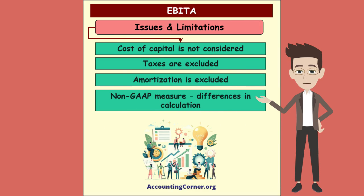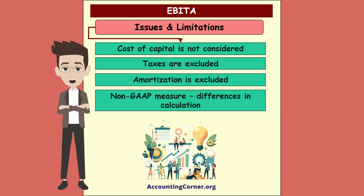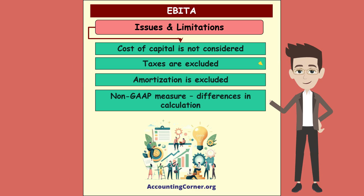Together with other financial metrics, EBITDA also has its issues and limitations. EBITDA does not consider the cost of capital, which is interest expense, so it can overstate a company's performance if it has high debt levels. It also excludes taxes, which can vary significantly between companies and jurisdictions, leading to misleading comparisons. Additionally, amortization is excluded, which can make companies with significant intangible assets appear more profitable than they are.